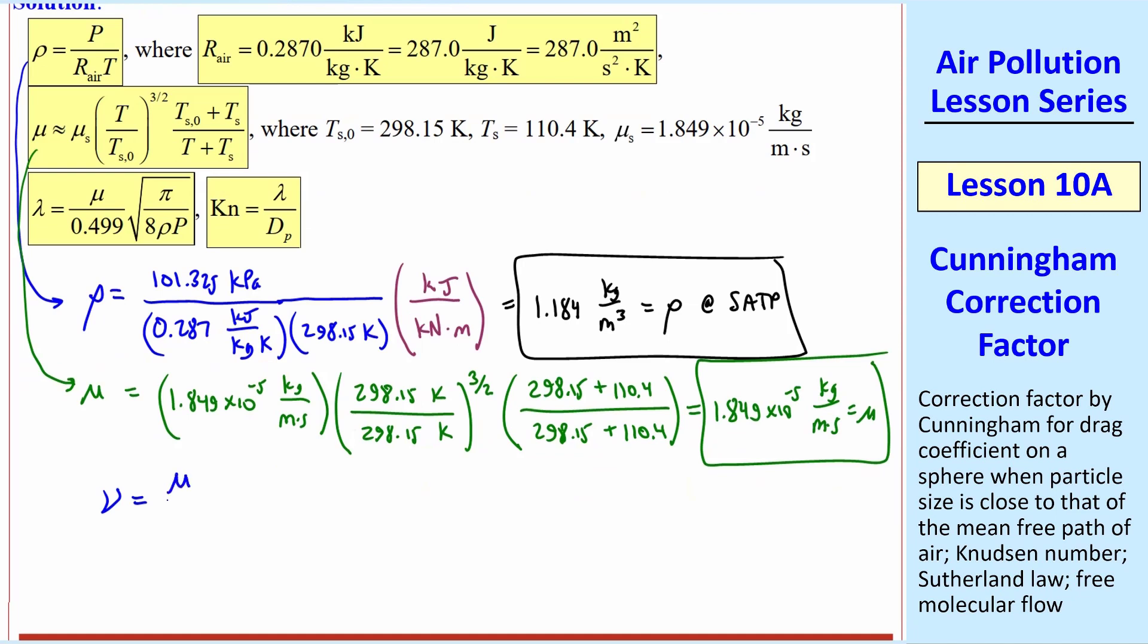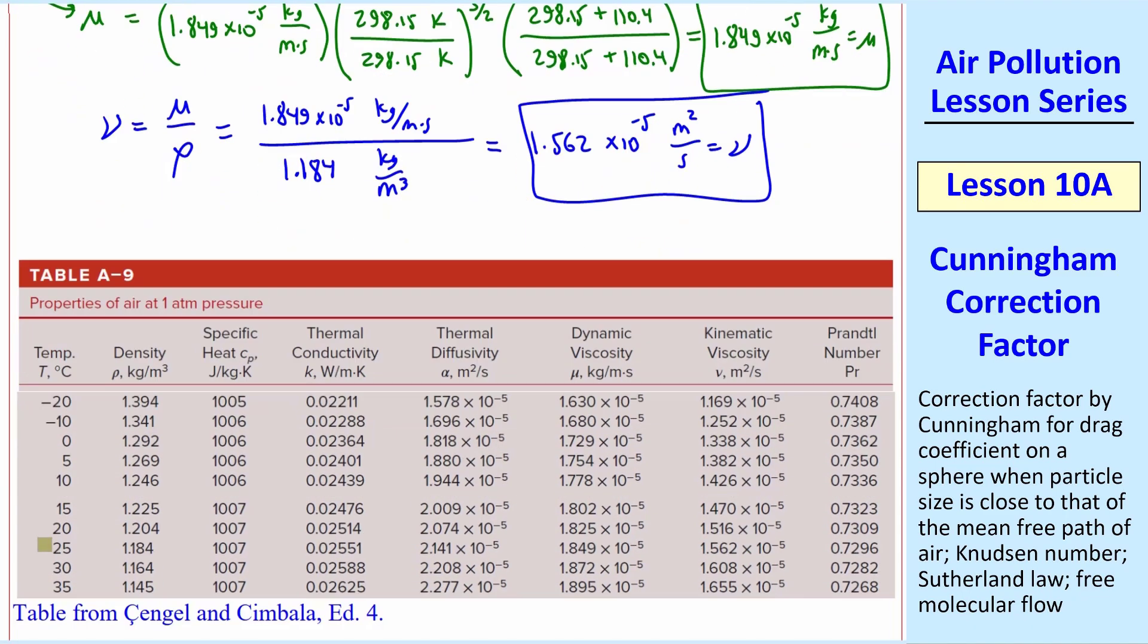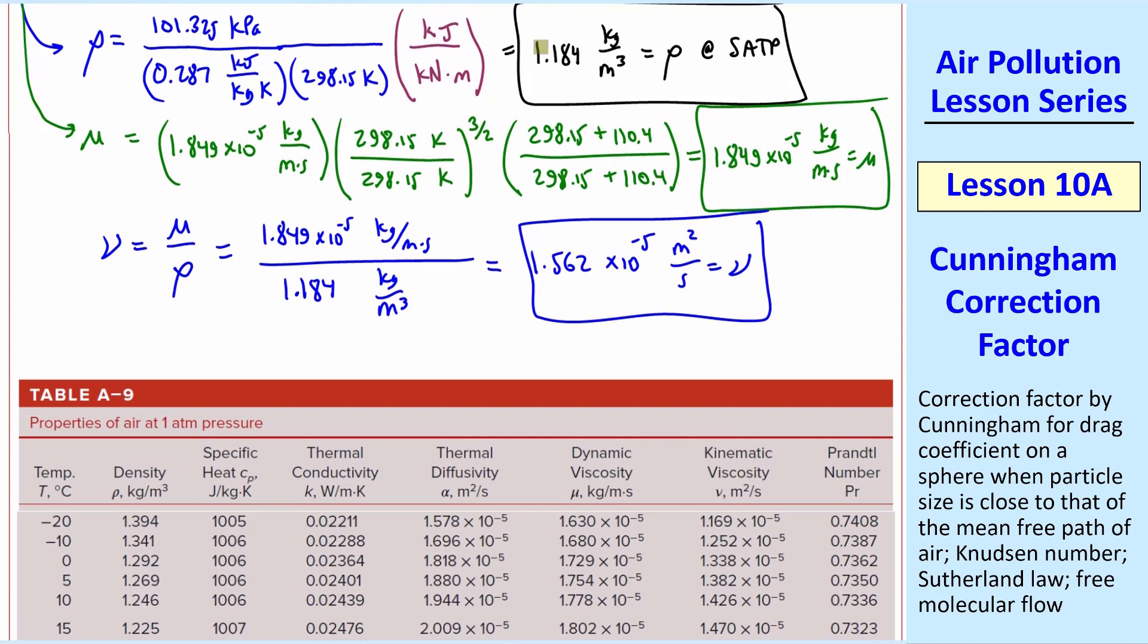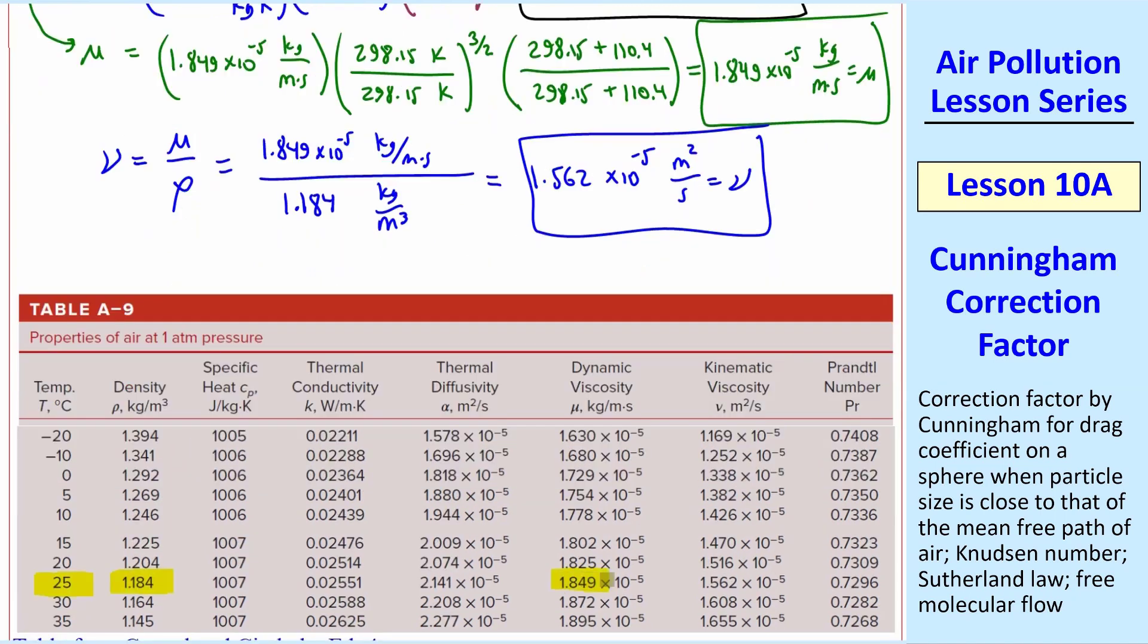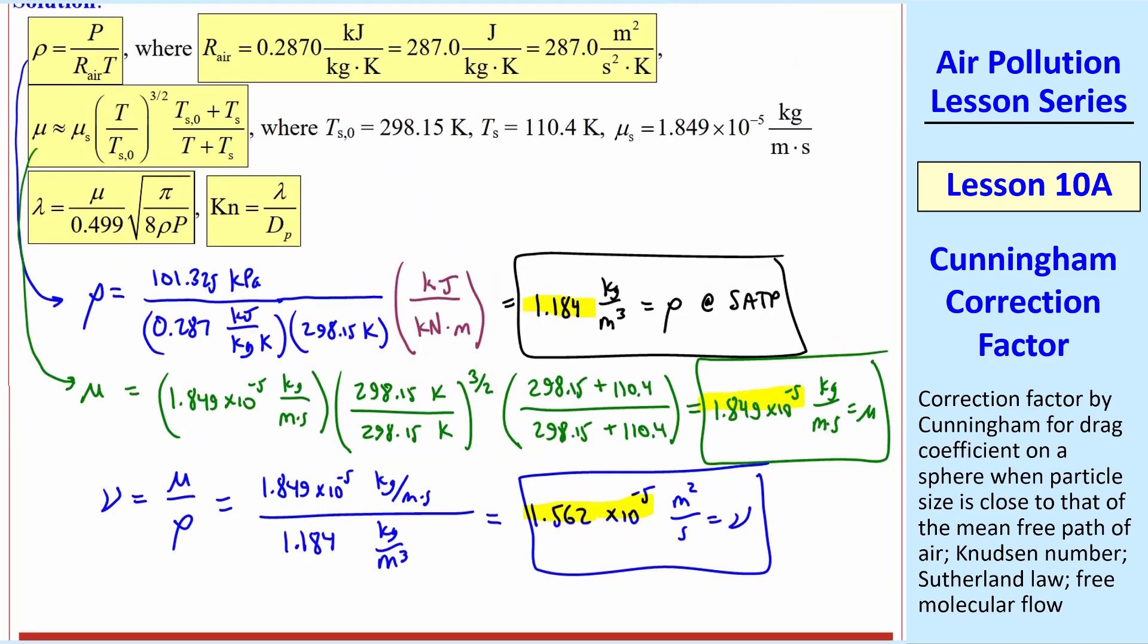Recall the kinematic viscosity is mu over rho, which gives us 1.562 times 10 to the minus 5th meter squared per second. Here I compare with the values given in the appendix. At 25 degrees C, the density is 1.184, which agrees with this. The viscosity is 1.849 times 10 to the minus 5, with the same units. And the kinematic viscosity also agrees with our calculations. In fact, these are the equations that we used to generate this table.